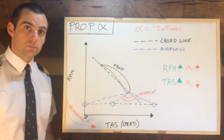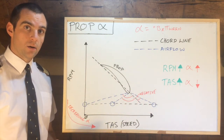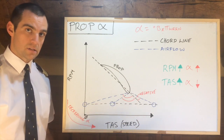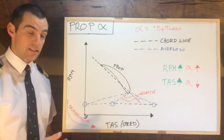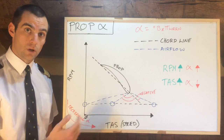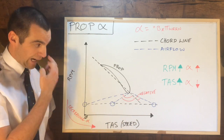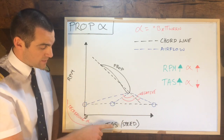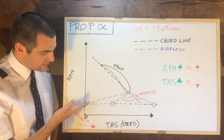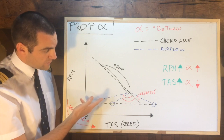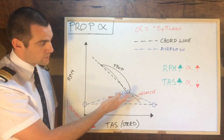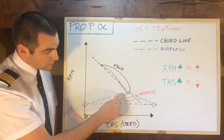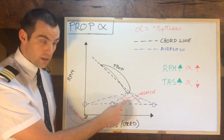Let's take the first example. We've just started up our aircraft, our little Piper, our Cessna, and we're sitting still. So we have zero TAS — we're on the ground. However, we have some RPM. If we have some RPM but zero TAS, you can see that if we follow the relative airflow to the tip of the propeller, the angle is going to be quite large.